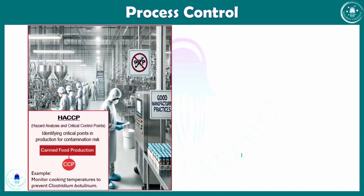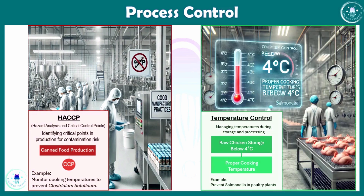Moving to process control, we encounter the term HACCP — Hazard Analysis and Critical Control Points. It is used to identify critical points in the production process where contamination could occur. For example, canned food production lines monitor cooking temperatures to prevent Clostridium botulinum, which is responsible for food poisoning.